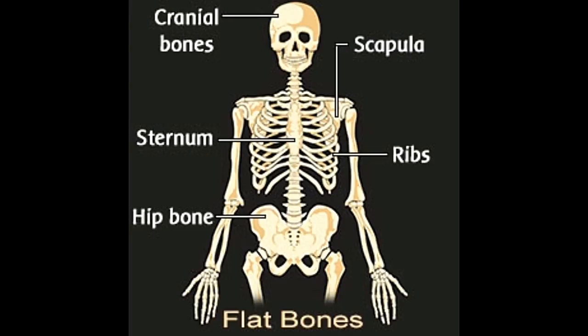Besides some of the facial bones and cranial bones, bones such as the sternum, ribs, scapula, and the hip bone are classified as flat bones. Did you know? The highest number of red blood cells in adults are found in the flat bones.